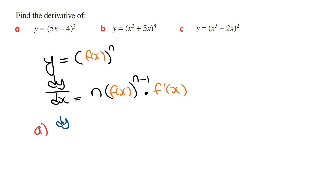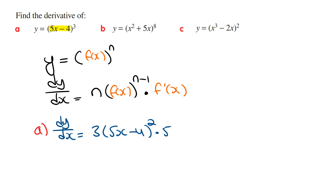dy/dx is going to be the derivative of the outside function, so this is going to be 3 times (5x minus 4) squared. Then we multiply by the derivative of the inside function. The inside function is 5x minus 4, and its derivative is 5, so this is times 5. Cleaning this up, this is going to be 15 times (5x minus 4) squared.